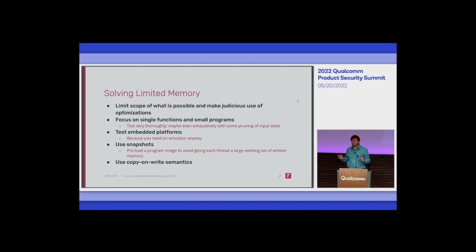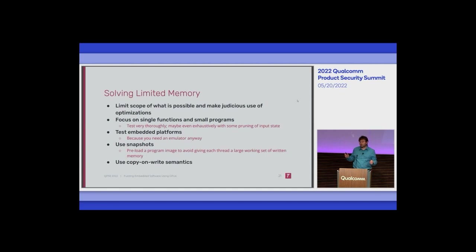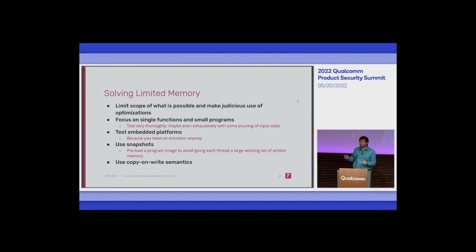You can also focus on very small functions — that's mainly been my test target. You can also focus on testing embedded platforms: if you're trying to fuzz an embedded platform at scale you'll need an emulator, and if you're emulating anyway you might as well make a really fast one that works massively in parallel. The limitation is that each thread needs to maintain its own write working set, and it's very important to have good copy-on-write semantics that minimize duplicated memory between threads, since most of the time threads execute mostly the same code.